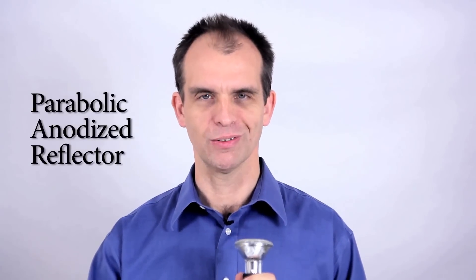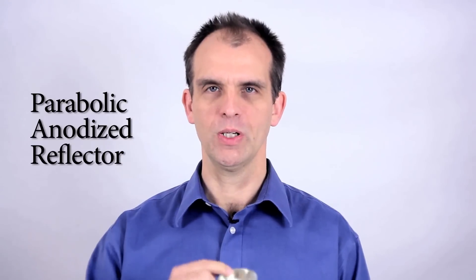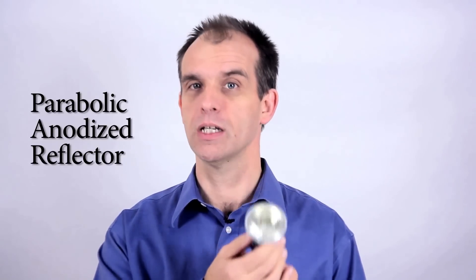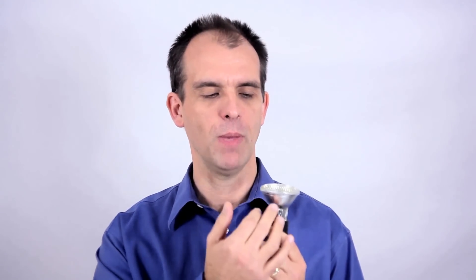But this is a PAR-20. So PAR, what is PAR? It's a parabolic anodized reflector. Why do we have a reflector? We have a filament in here. This is really just a form of an incandescent light. It has a filament, but it has a reflector inside it that is meant to reflect all the light forward.